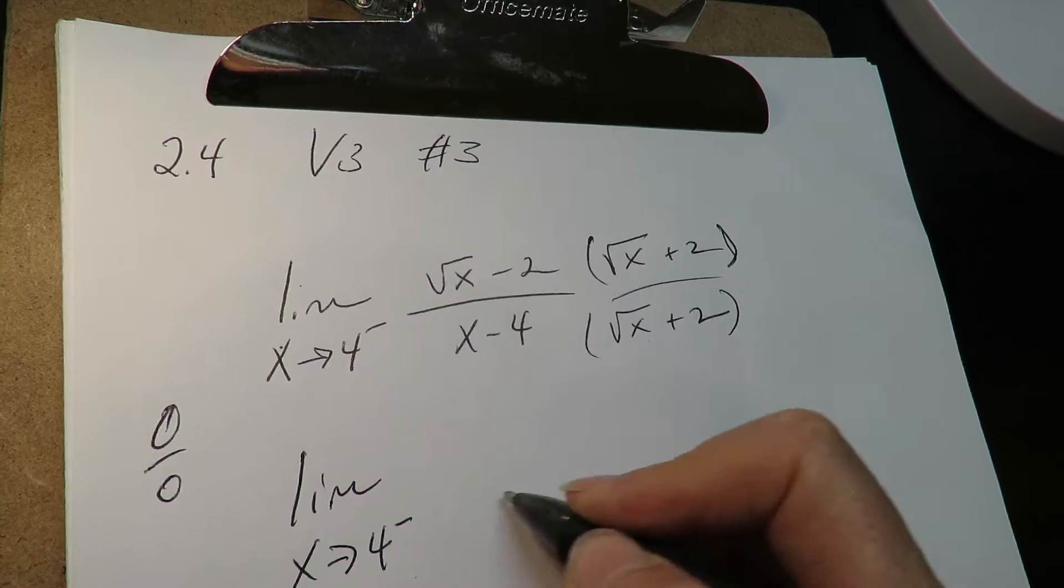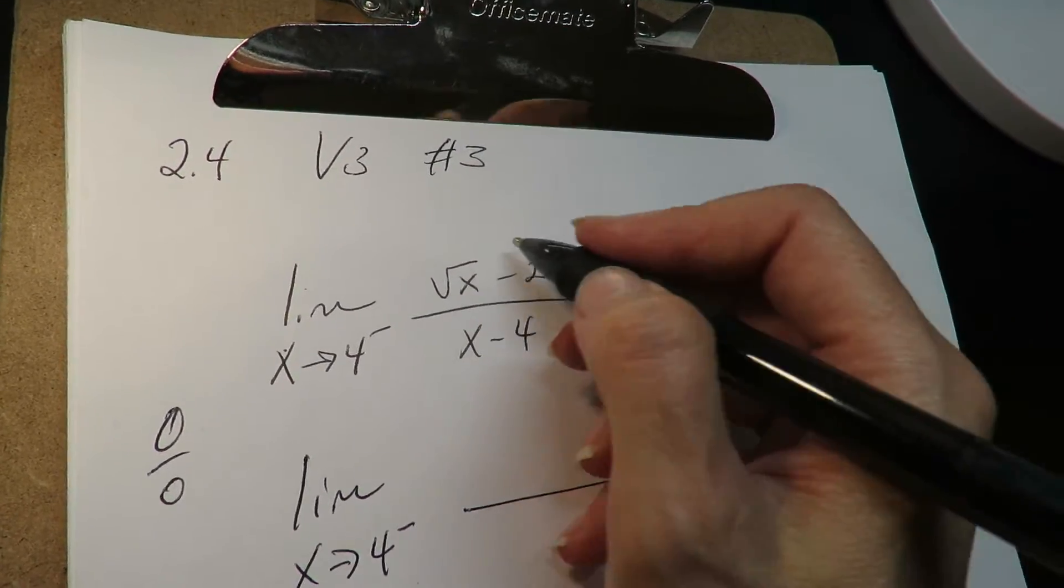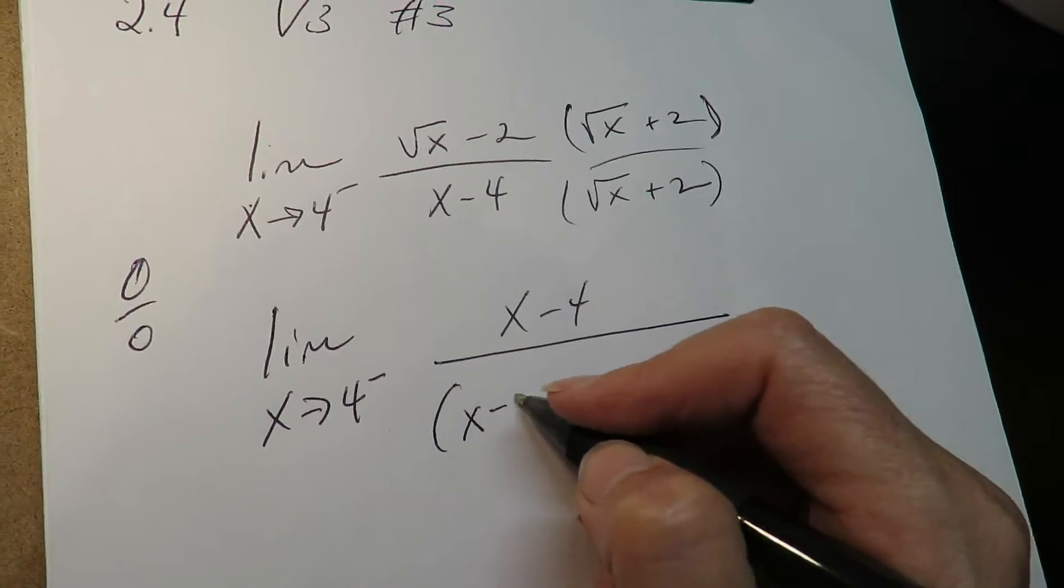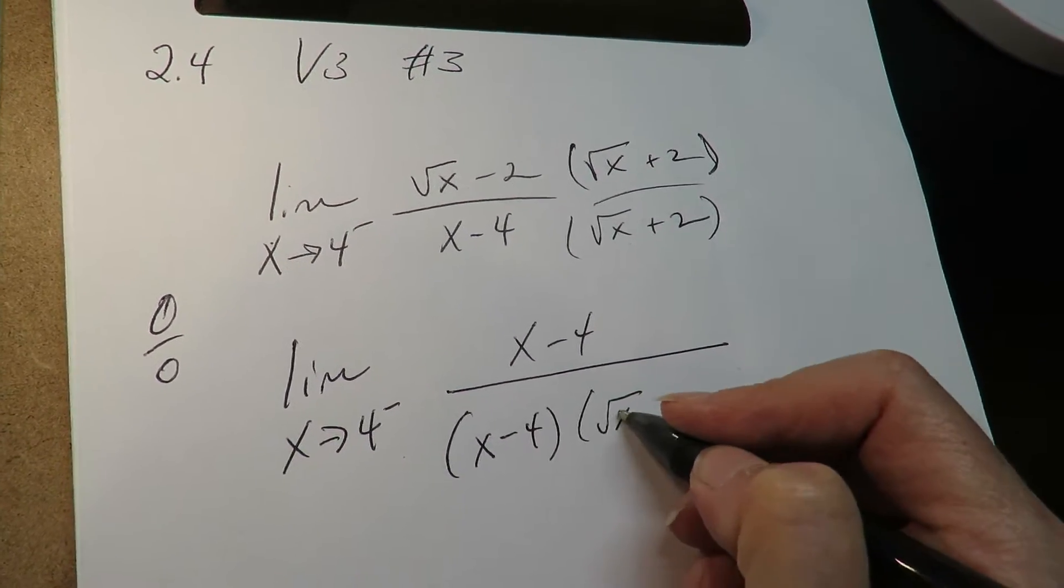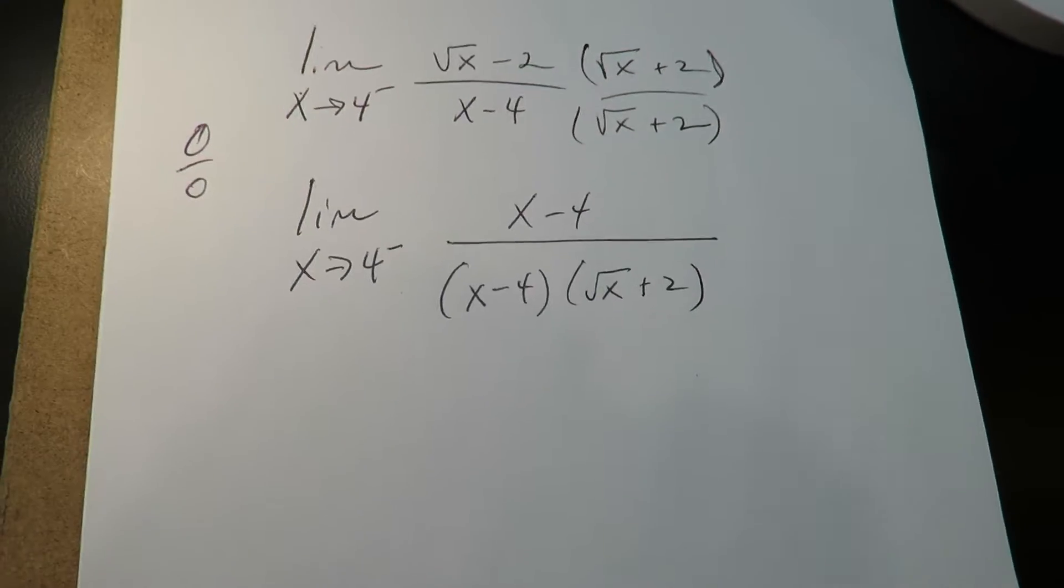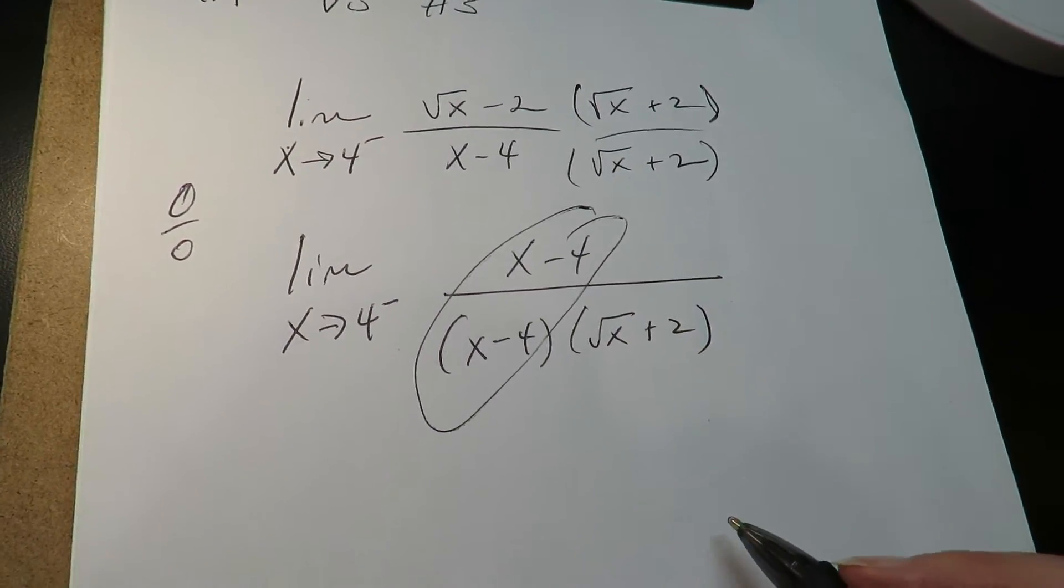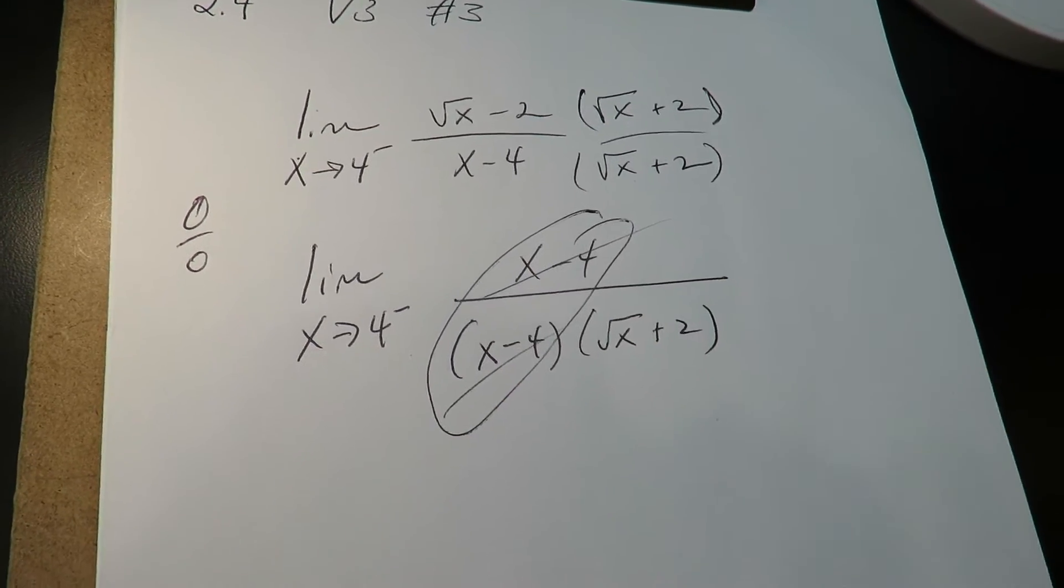This is a tiny bit tricky because if I foil out the numerator, I get x minus 4, but you do not want to foil out the denominator. And the reason you do not want to foil out the denominator is that you're going to end up with a common factor that's going to reduce out.